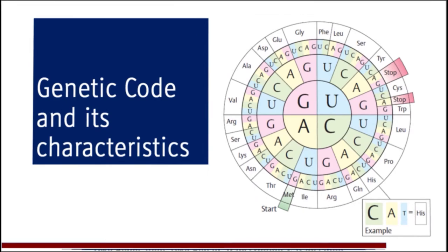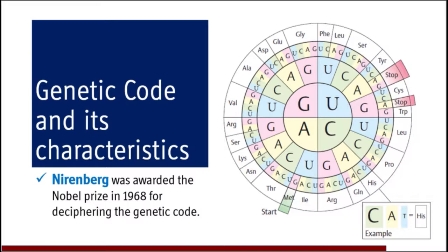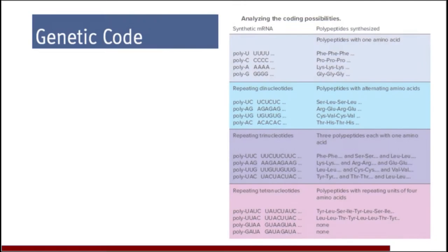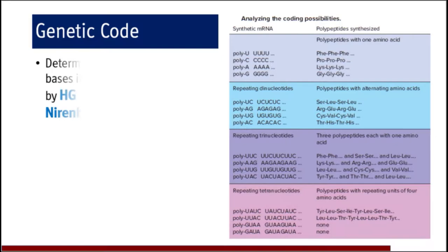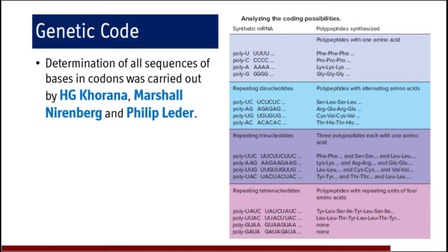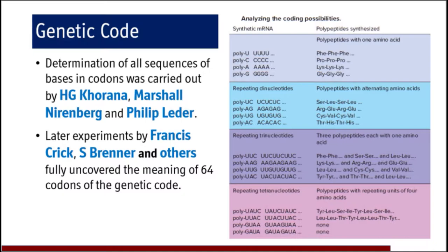First of all we'll go for genetic code and its characteristics. For deciphering the genetic code, Nirenberg was awarded the Nobel Prize in 1968. The determination of all sequences of bases in codons was carried out by Dr. Hargobin Khurana, Marshall Nirenberg and Philip Leder. Later experiments by Francis Crick, S. Brenner and others fully uncovered the meaning of 64 codons of the genetic code.